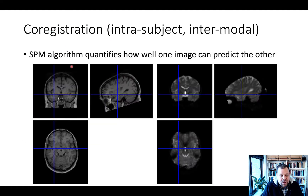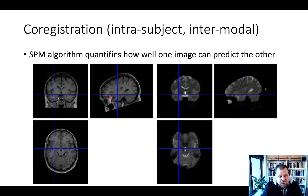What SPM does is: we leave the functional image untouched, but we take the anatomical image and match it to the functional image, such that we know that each region in the anatomical image — which was recorded with a different sequence and may therefore be in somewhat different space — then matches the functional image. SPM uses a mutual information algorithm that minimizes a cost function, such that when it's done, you can predict one image from the other.